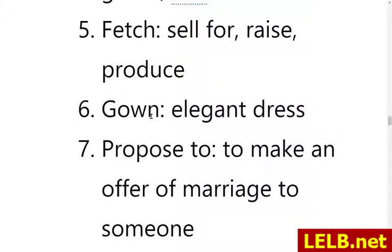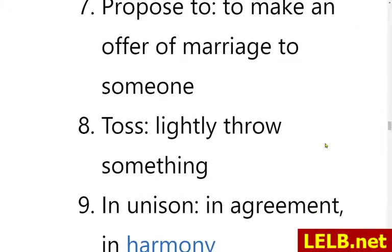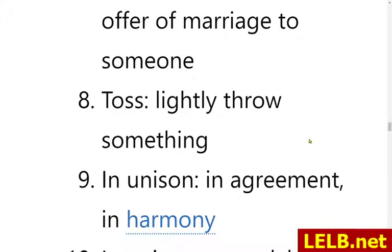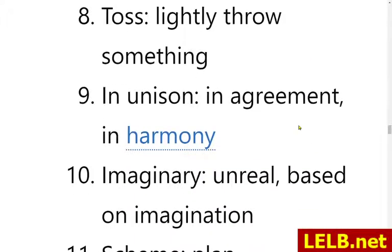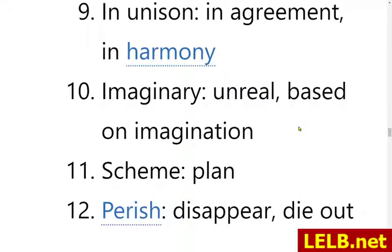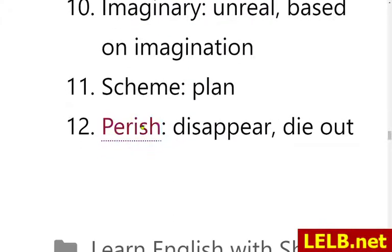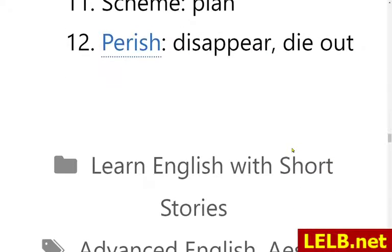Six — gown: elegant dress. Seven — propose to: means to make an offer of marriage to someone. Eight — toss: lightly throw something. Nine — in unison: in agreement, in harmony. Ten — imaginary: unreal, based on imagination. Eleven — scheme: plan. Twelve — perish: means to disappear or die out.